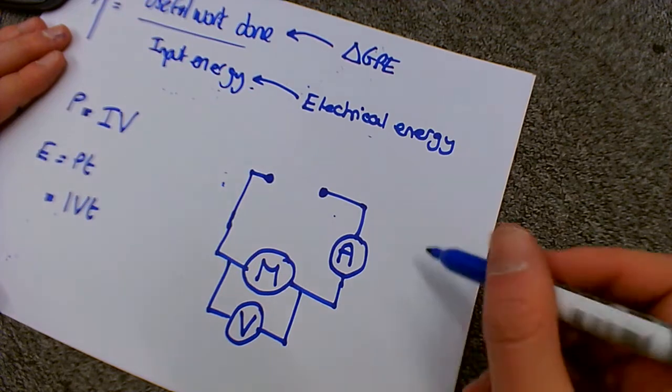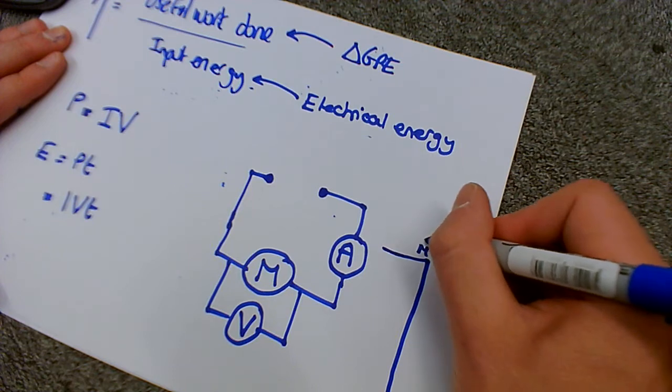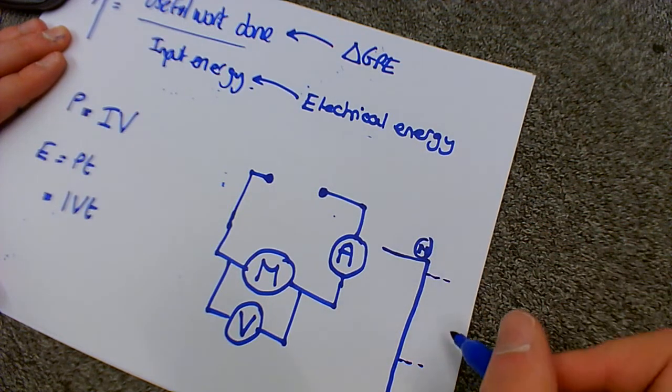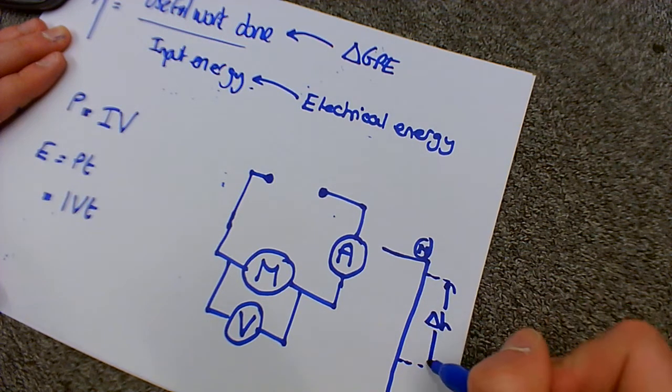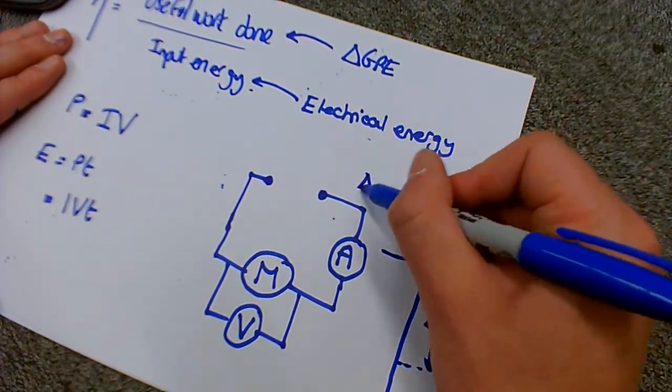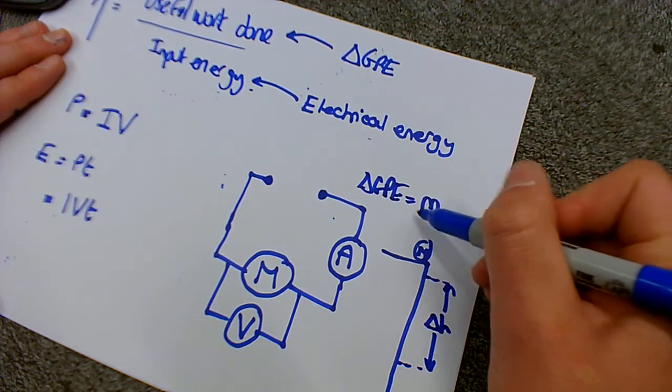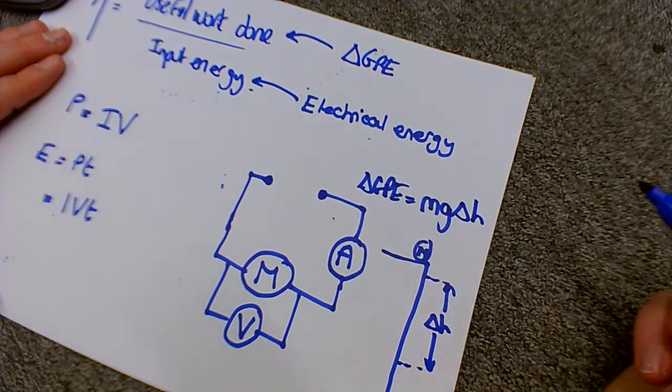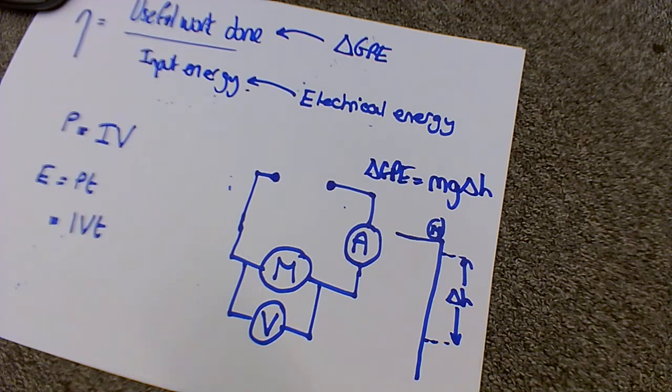And then in terms of the mechanical setup we've got the edge of a bench here. So the motor is here. And what we're going to do is we're going to lift 100 grams through a certain height, which I'm going to call delta H. And the change in GPE is going to be doing the math. So that's 0.1 kilograms times G which is 10 on earth times by that height change. So this is the general way we're going to go about carrying out this experiment.